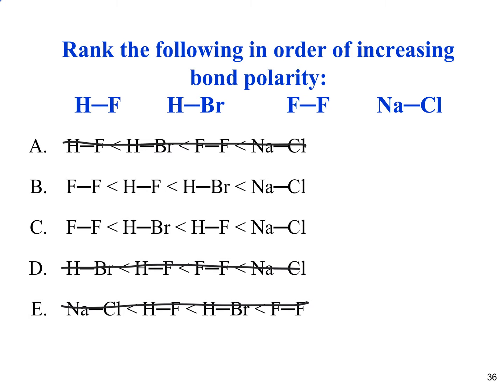We're left with either B or C. We have to decide: is HF or HBr more or less polar? Remember that fluorine has the greatest electronegativity and bromine has lower electronegativity. So the difference between hydrogen and fluorine must be greater than the difference between hydrogen and bromine. C is our correct answer.